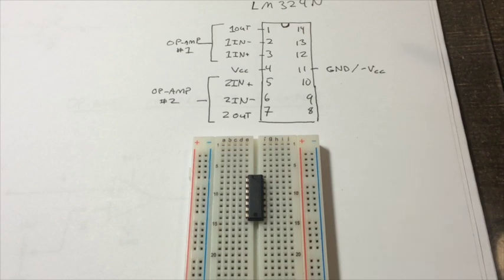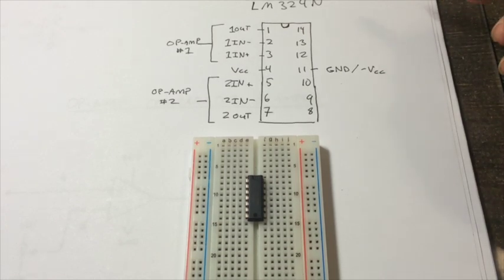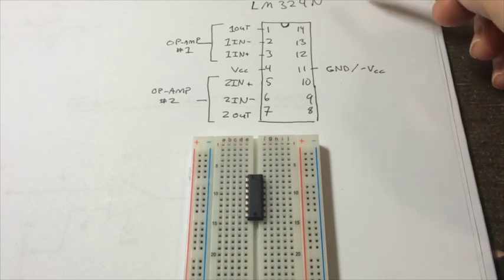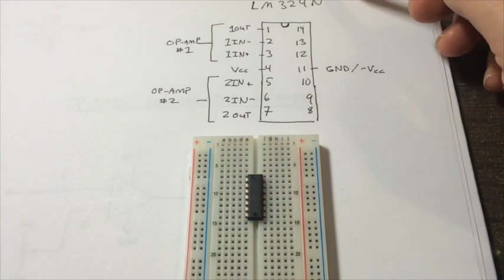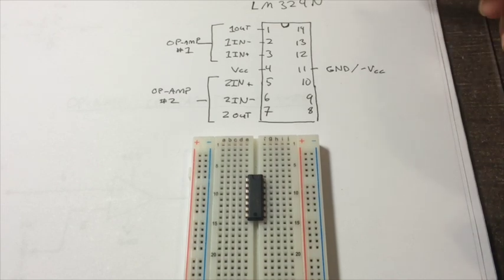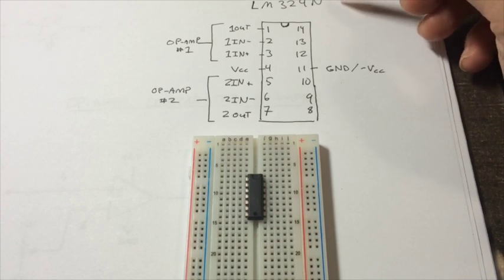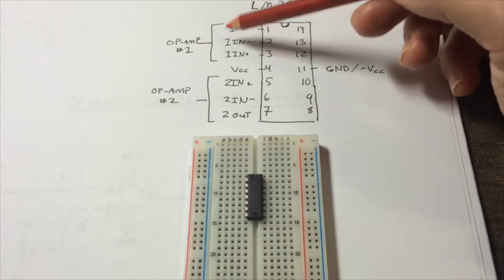So now I'm going to do a couple of videos on the op-amp that we are using. An op-amp is an operational amplifier, and for this class we need to use one when we are working with the strain gauge. So I'm going to go over using the LM324N, which is the one provided with our class.